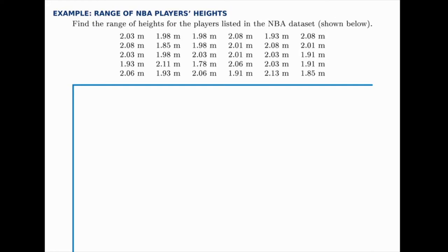Here we'll find the range of a data set that we're given. The data set is the heights of the players given in the NBA data set. The range is really simple — it's just the difference between the smallest and the largest. All we have to do is look through this list and find the smallest number and the largest number that occur.